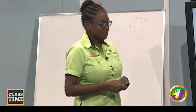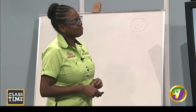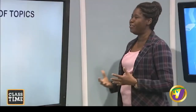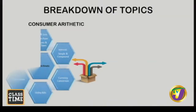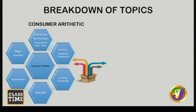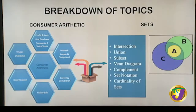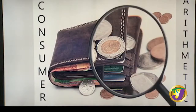Here is the breakdown of topics we hope to cover. For consumer arithmetic: profit and loss, hire purchase, discount, sales tax, simple and compound interest, currency conversion, utility bills, depreciation, wages, and overtime. Under sets: intersection, union, subset, Venn diagram, complement of a set, set notation, and cardinality of sets. Let's get into it, starting with consumer arithmetic.